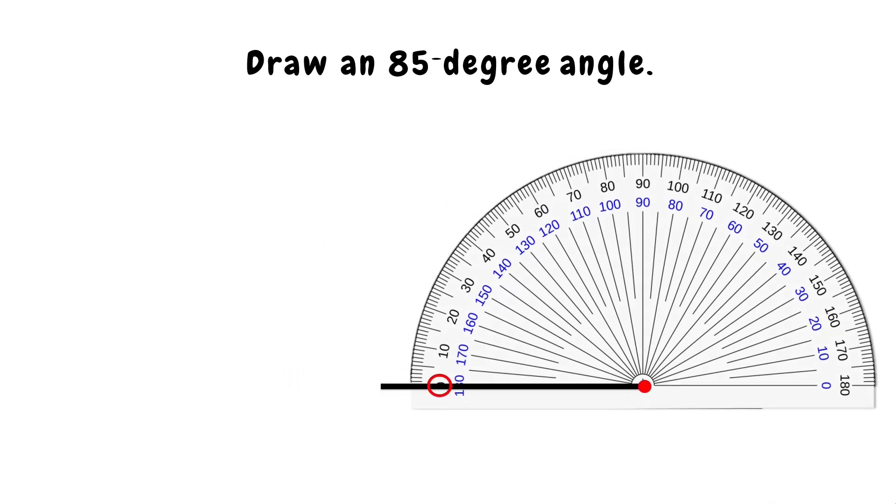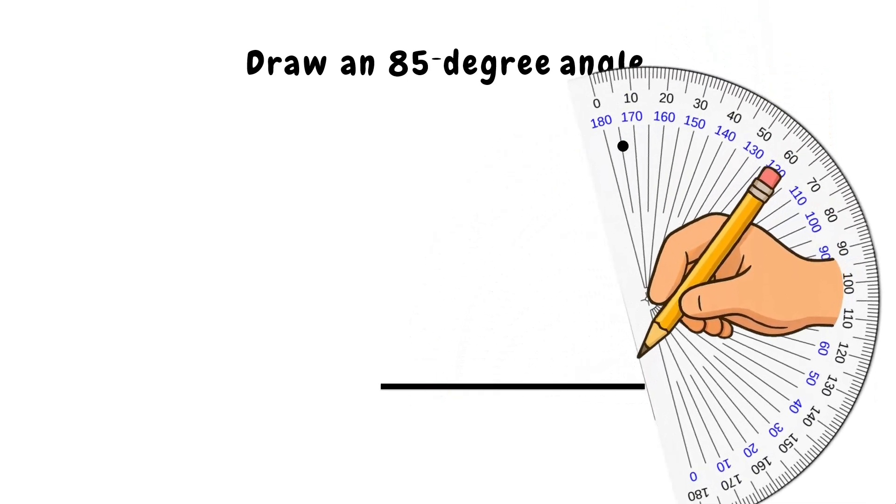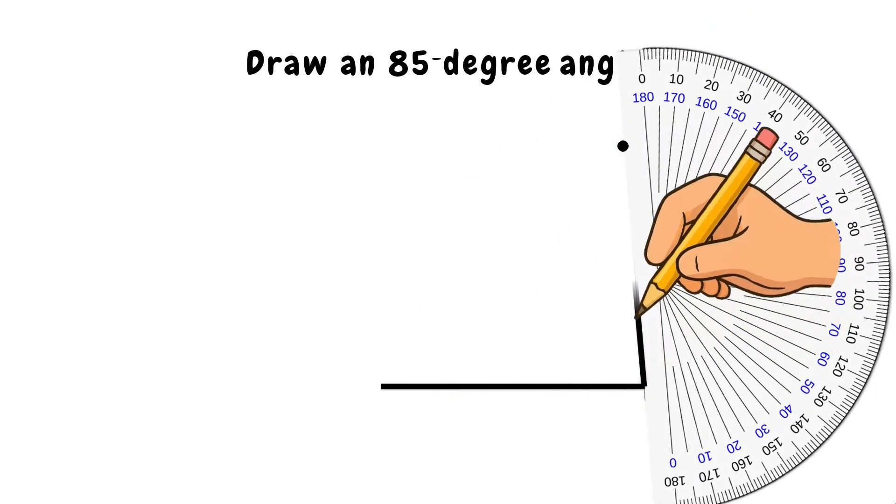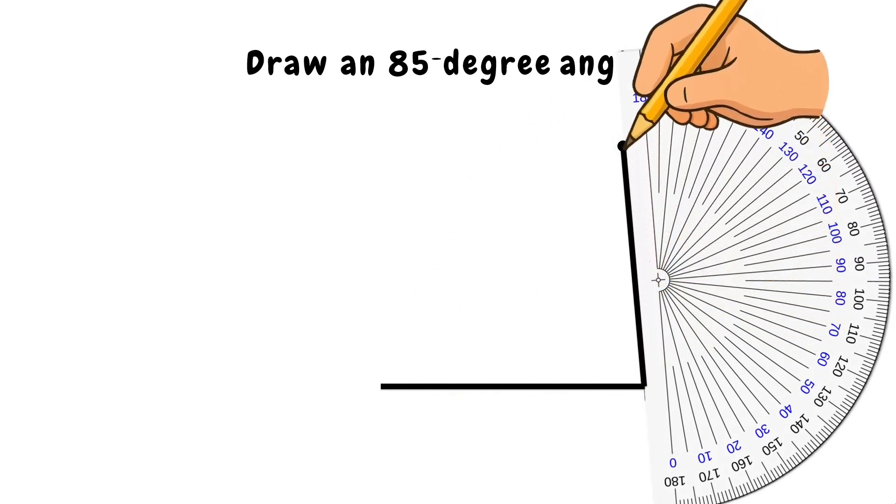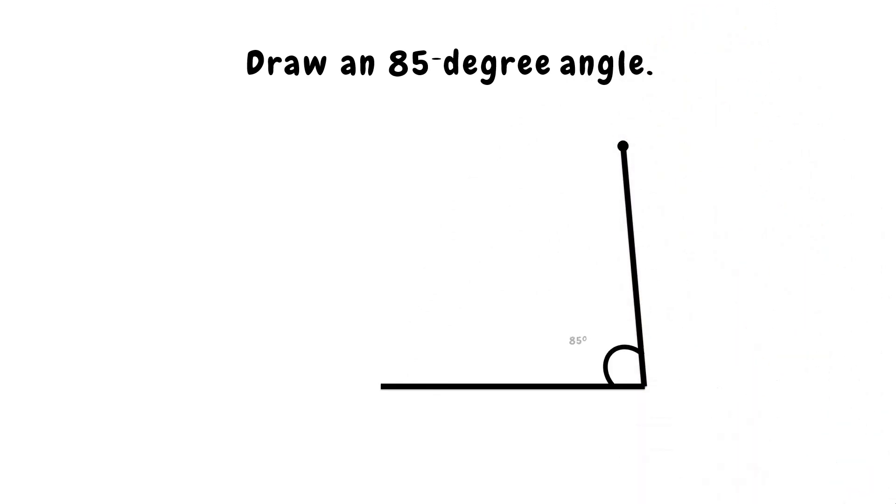Here, I am using the outer scale, but you can use either outer or inner scale. Then, find the 85 degrees on the protractor and mark a small dot. Now, connect the dot back to the end point. And there you have it! You've drawn an 85 degree angle.